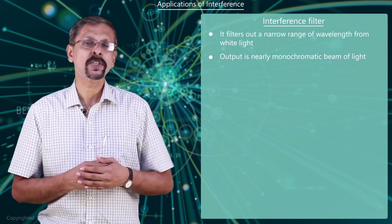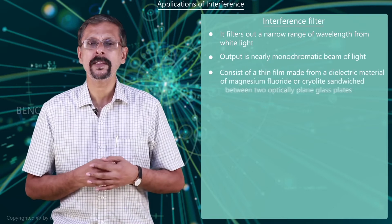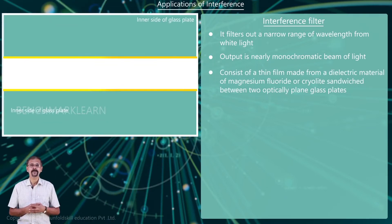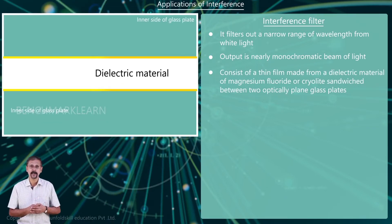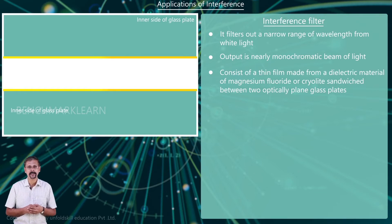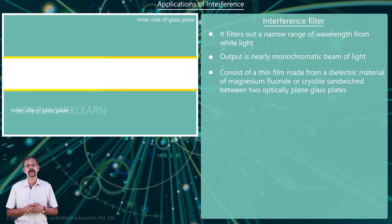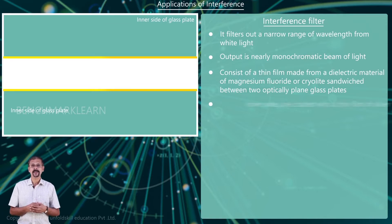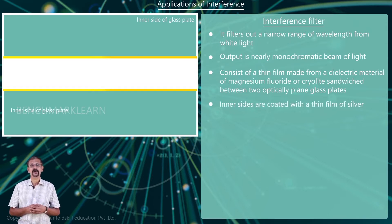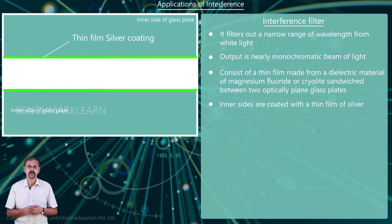It consists of a very thin transparent film made of a dielectric material like magnesium fluoride or cryolite, sandwiched between two optically plain glass plates. The inner sides of the glass plates are also coated with a thin film of silver.